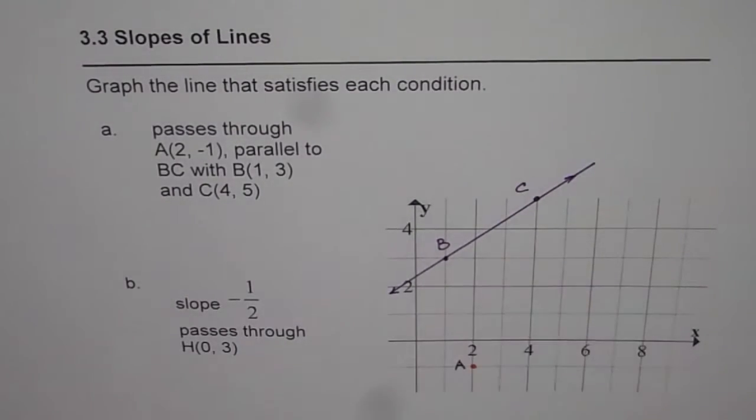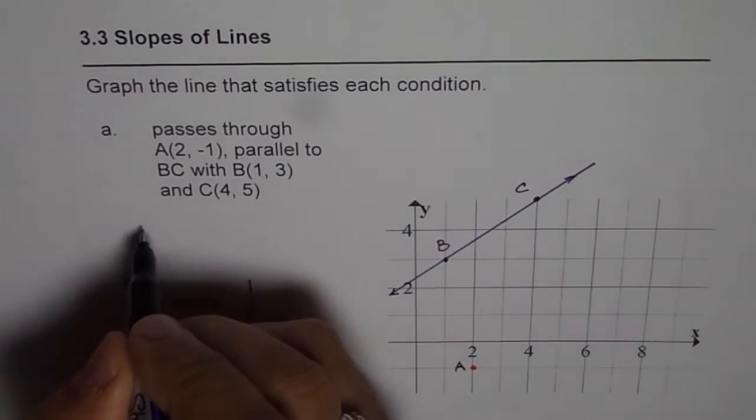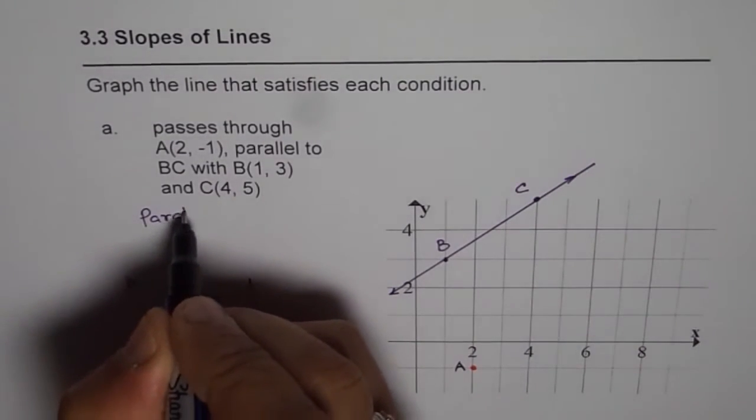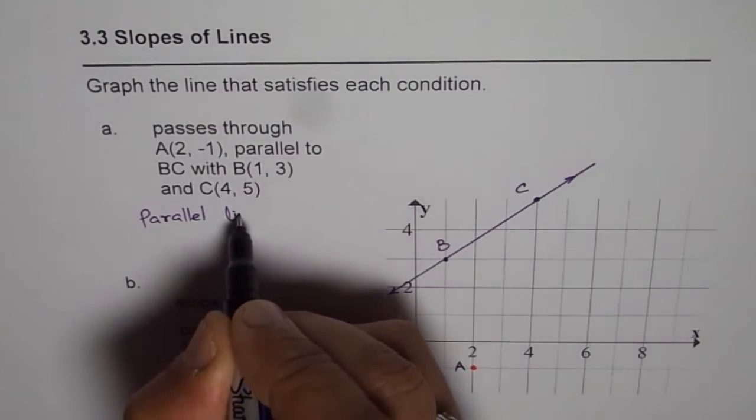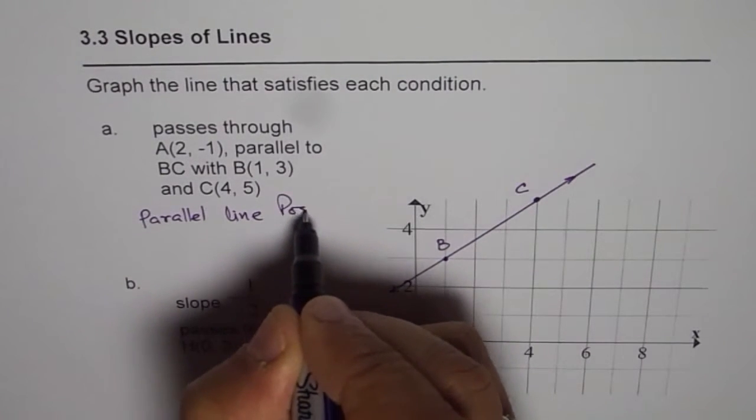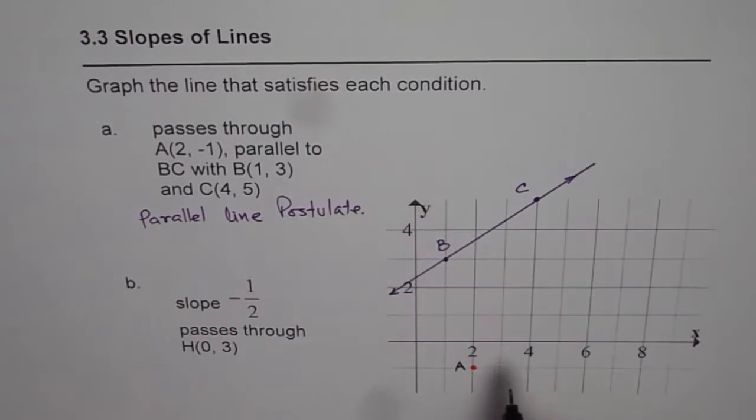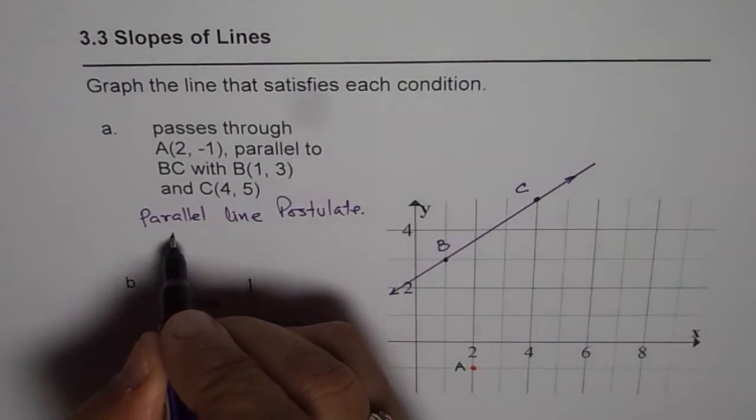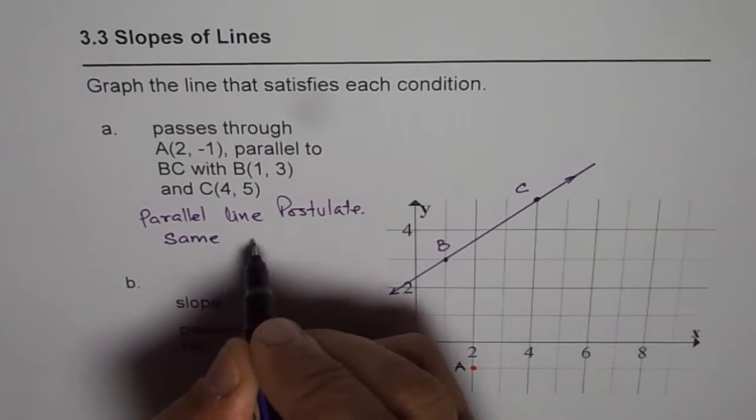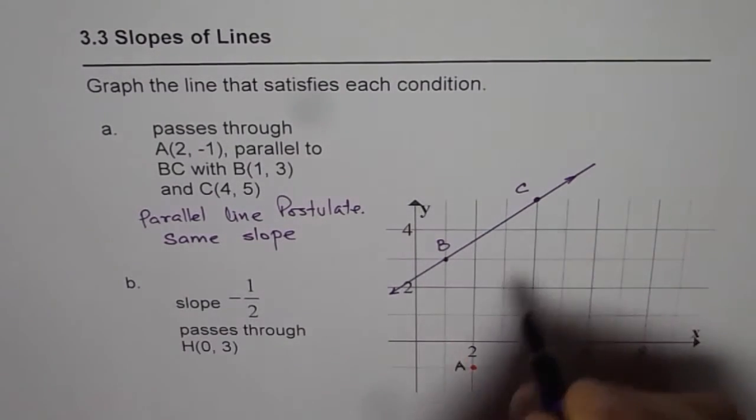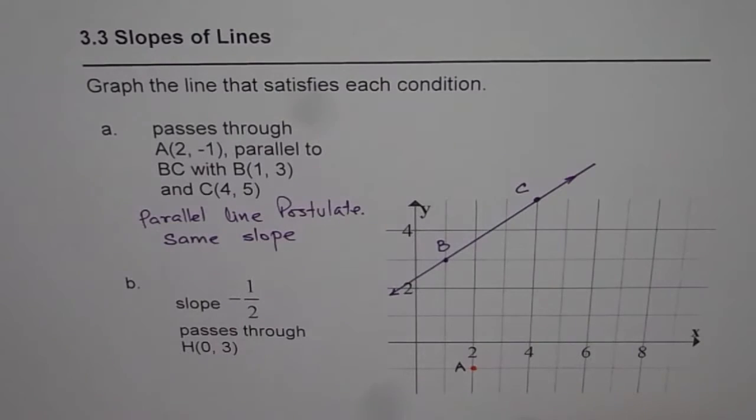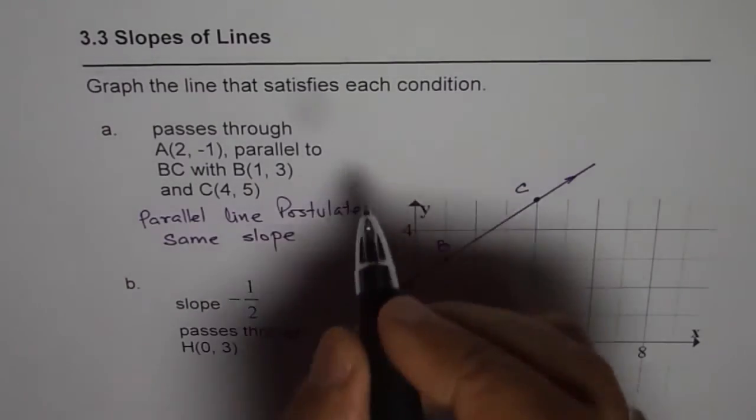We can apply the parallel line postulate. Parallel lines should have the same slope, so the slope of both lines should be exactly the same. First, let's find the slope of BC.